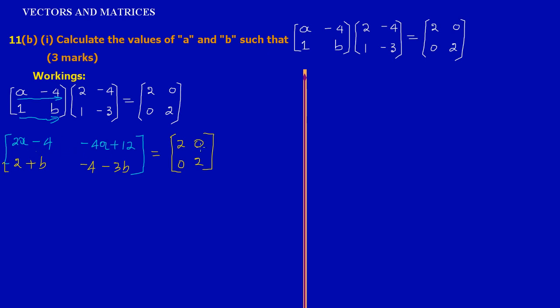Now here we have a matrix equation, and if you notice on both sides of the equation, we have 2 by 2 matrices. We have one row, two rows, one column, two columns. Likewise we have one row, two rows, one column, two columns. Note that in any matrix equation where you have matrices of the same order on both sides of the equation, it simply means that corresponding values are equal.